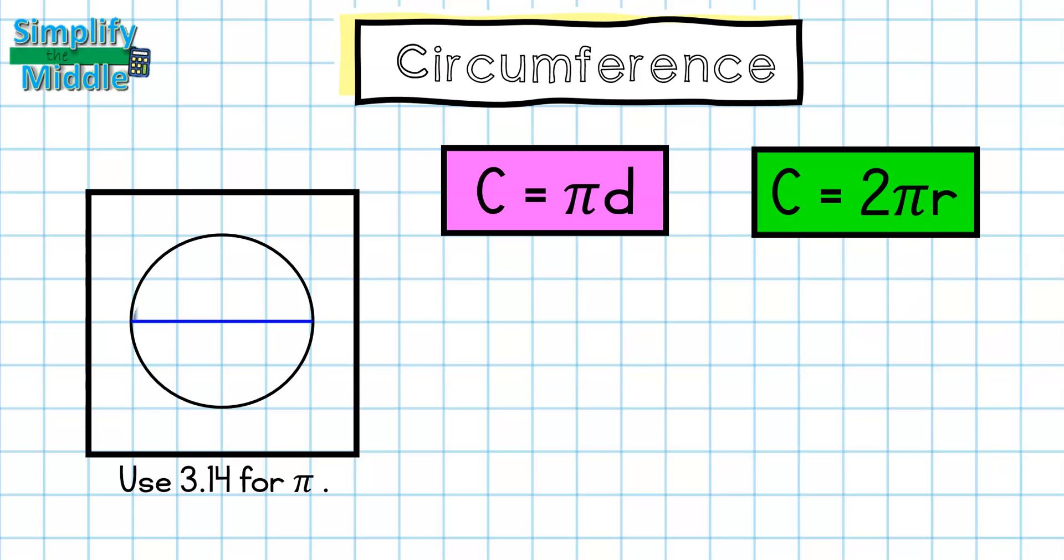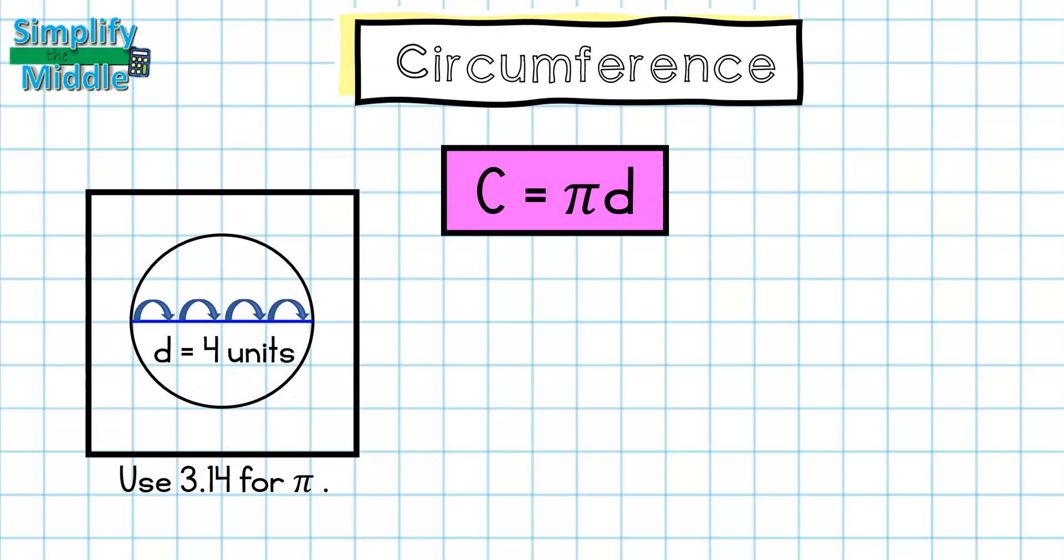Going across the circle, I have a distance of one, two, three, four. So the diameter here is four units. So now I know that I'm going to be using circumference equals pi times diameter.